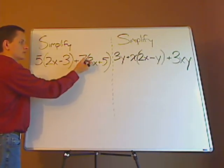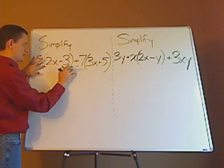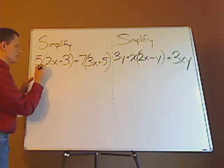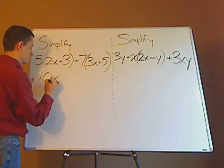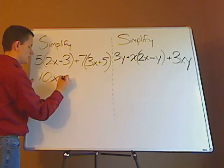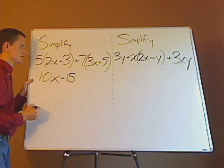Now with the 5, you want to distribute it to the 7 because it's only attached to these parentheses. So 5 times 2x is 10x, 5 times 3 is 15, that'll be minus 15.